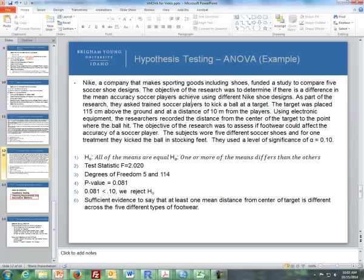As part of the research, they asked trained soccer players to kick a ball at a target. The target was placed 115 centimeters above the ground and at a distance of 10 meters from the players. Using electronic equipment, the researcher recorded the distance from the center of the target to the point where the ball hit. The objective was to assess if footwear could affect the accuracy of a soccer player. The subjects wore five different soccer shoes, and for one treatment, they kicked the ball in stocking feet.